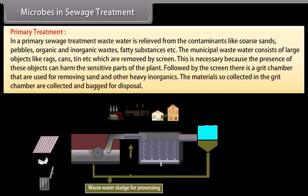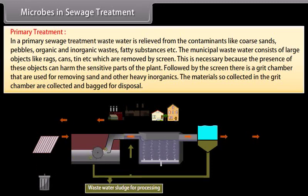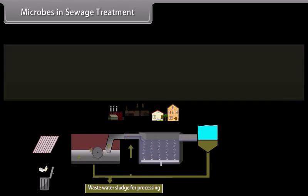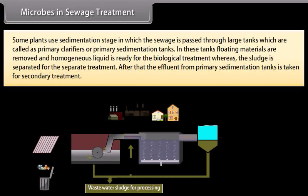The municipal wastewater consists of large objects like rags, cans, and tins, which are removed by a screen. This is necessary because the presence of these objects can harm the sensitive parts of the plant. Following the screen, there is a grit chamber used for removing sand and other heavy inorganics. The materials collected in the grit chamber are collected and bagged for disposal. Some plants use a sedimentation stage in which sewage is passed through large tanks called primary clarifiers or primary sedimentation tanks.